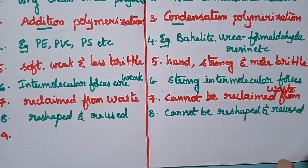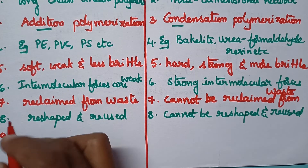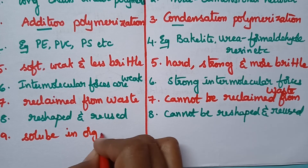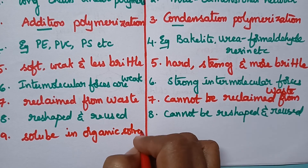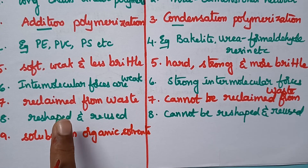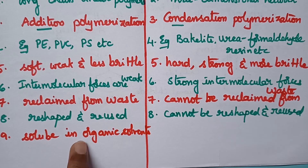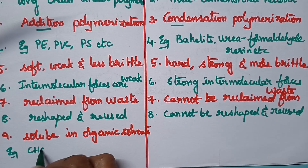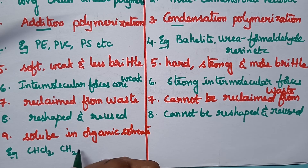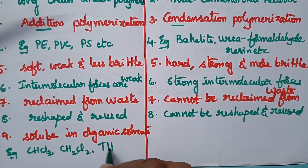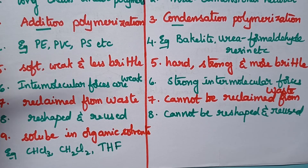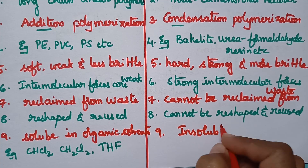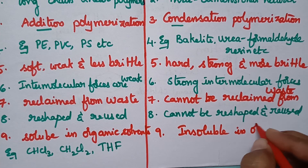If you observe the solubility, thermoplastics are soluble in organic solvents. Remember, plastics are organic in nature and hence they are soluble in organic solvents such as chloroform, dichloromethane, and tetrahydrofuran. But coming to the thermosetting plastics, they are insoluble in organic solvents.